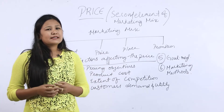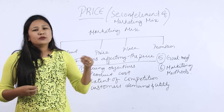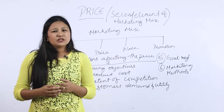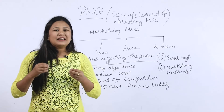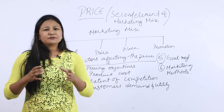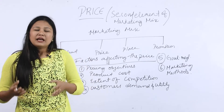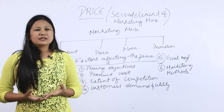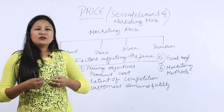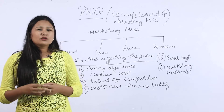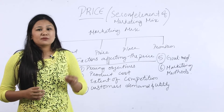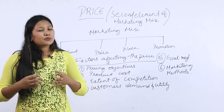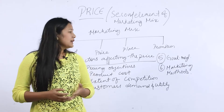The next factor is government regulations. The government plays a very important role in pricing decisions. In the interest of the general public, the government decides prices for certain essential commodities and imposes regulations on pricing policies to keep a check on monopolistic markets.